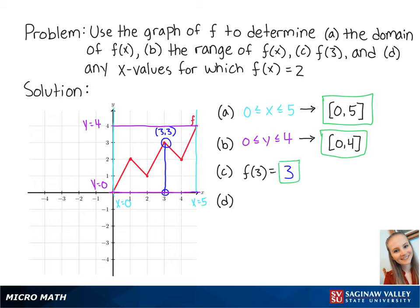For letter d, we want to find any x values for which f of x equals 2. Looking at the graph, we can see that when y is 2, x is 1, 2.5, and 4. So the answer for letter d is that x equals 1, 2.5, and 4.